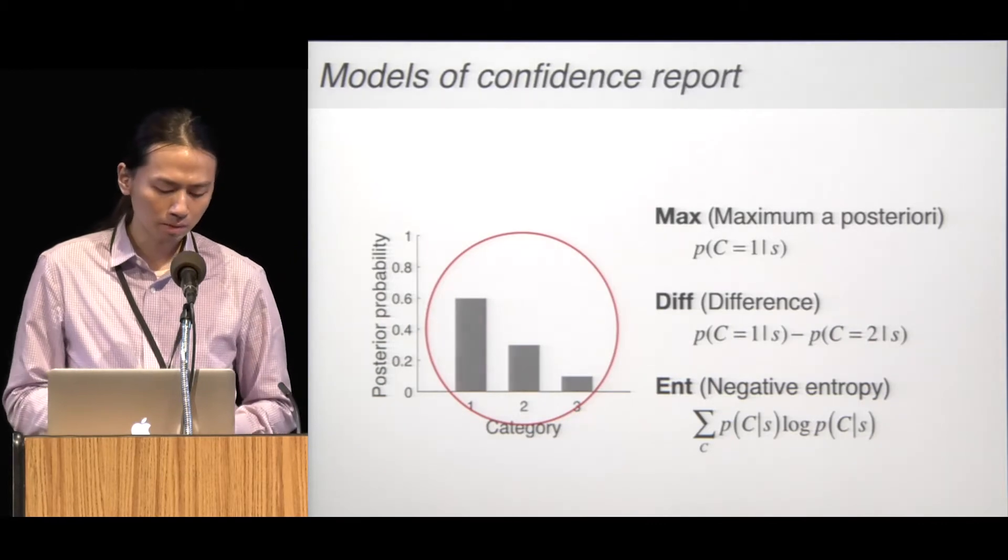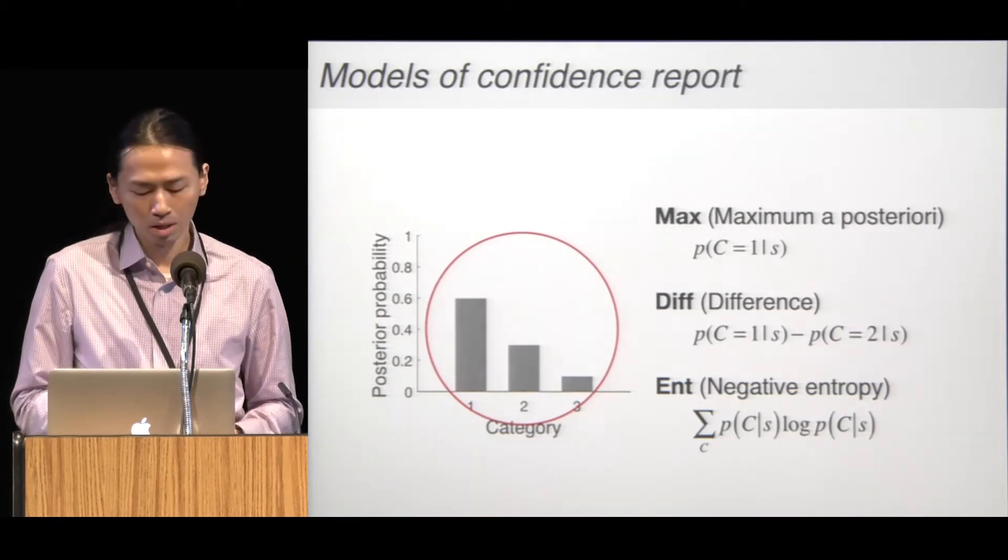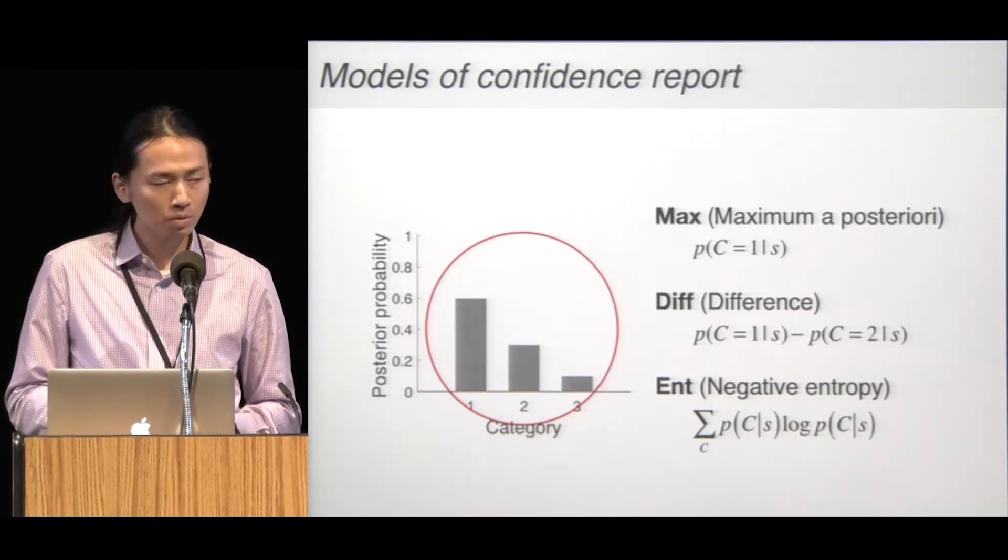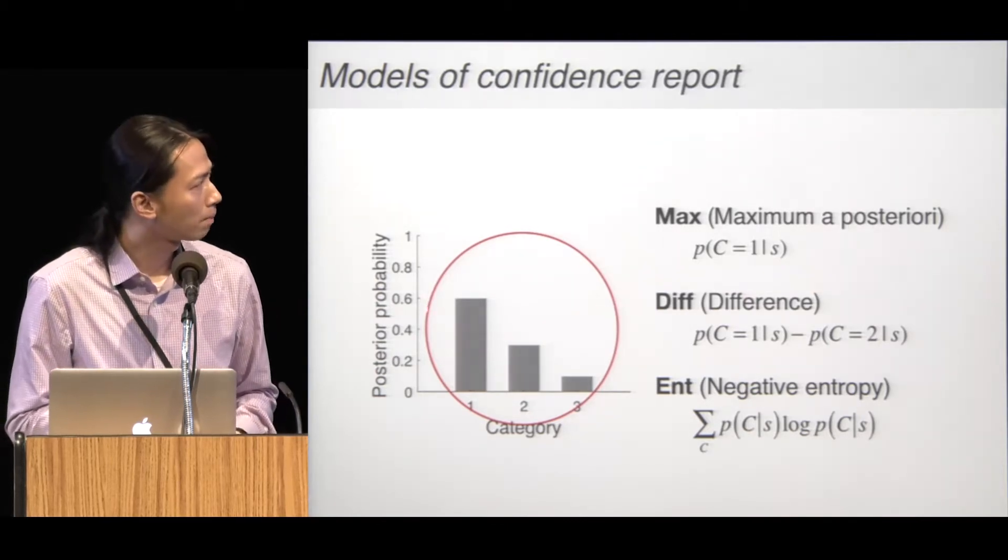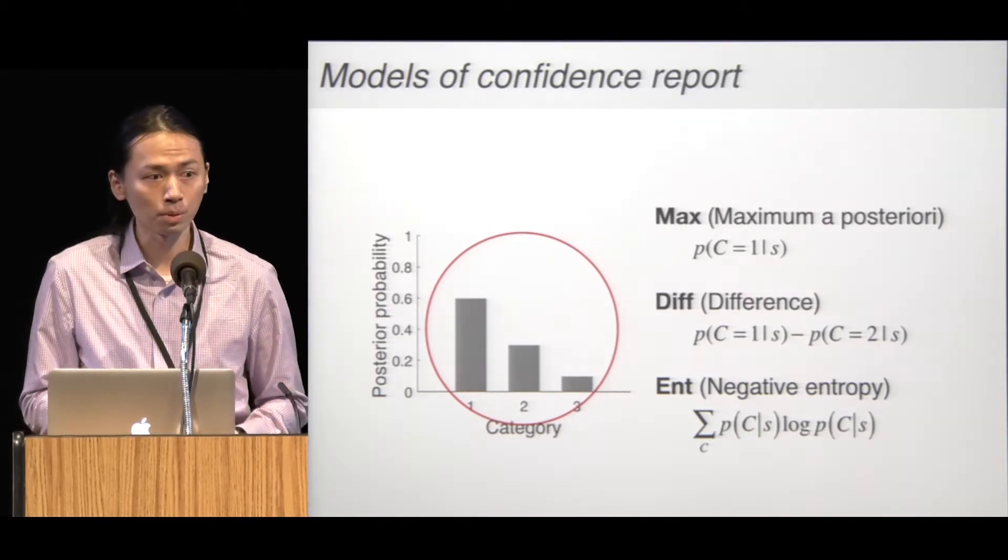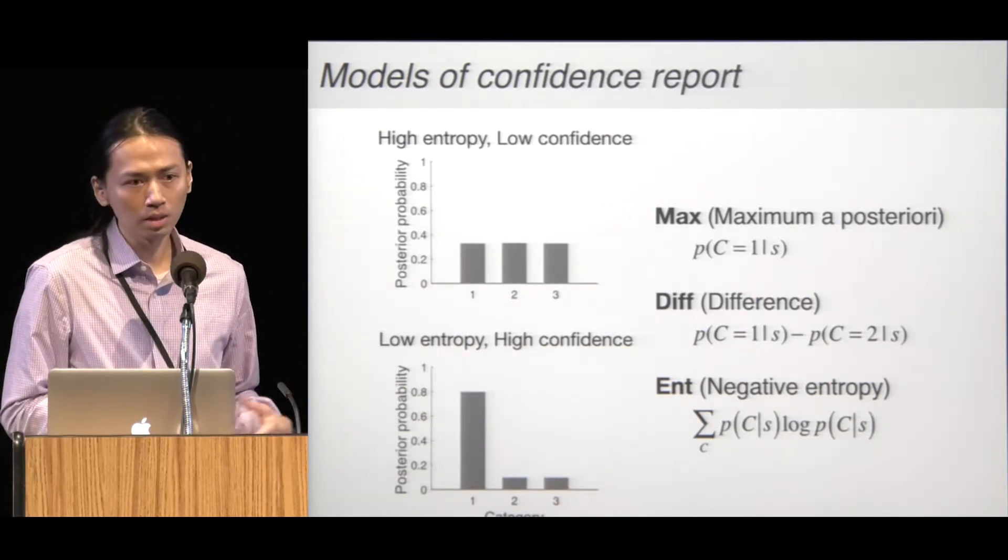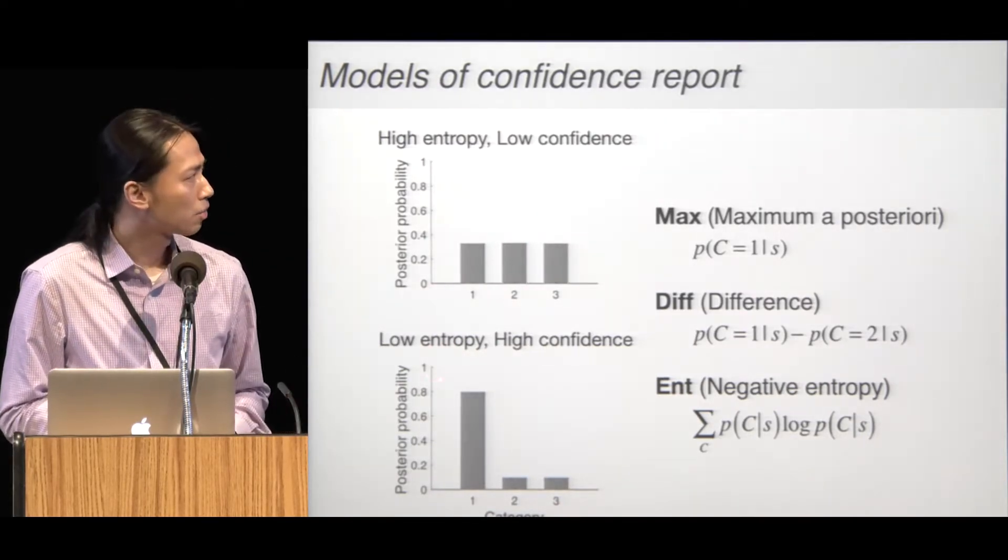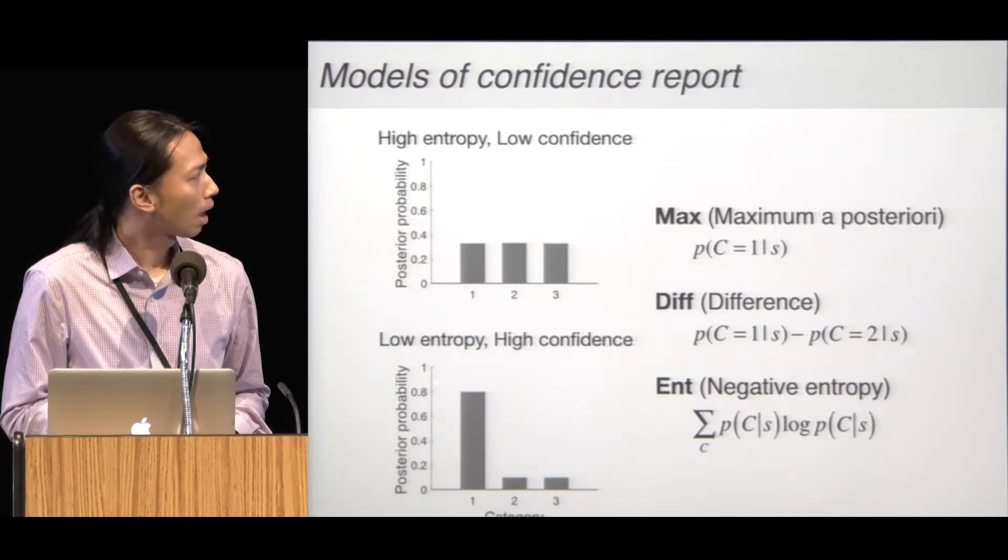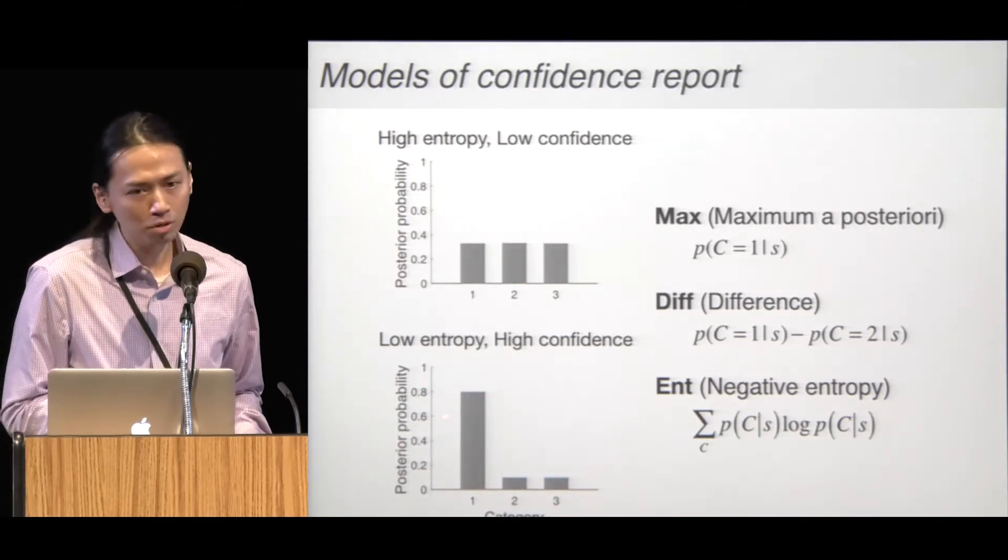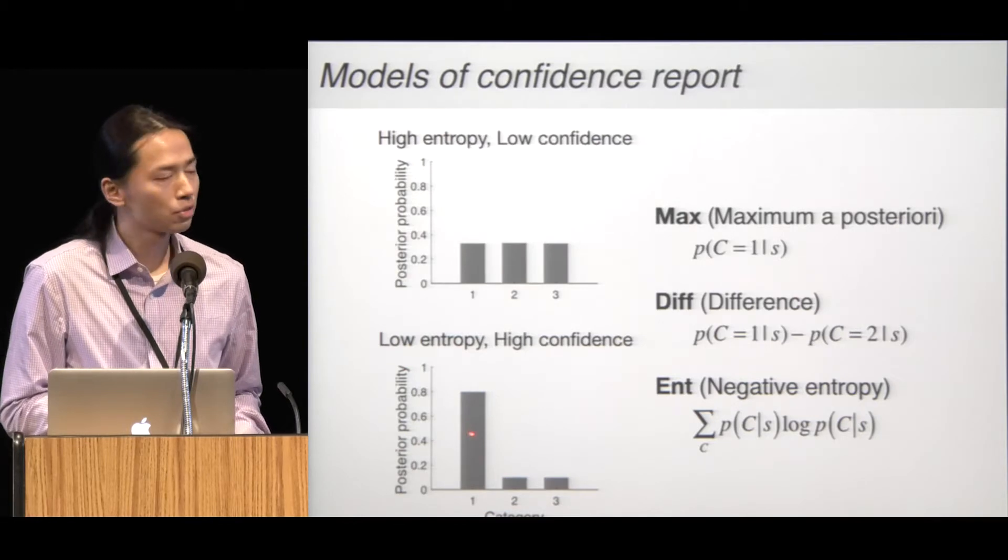It's also possible that confidence depends on the entire posterior distribution. We use entropy to describe the spread of the posterior distribution. Distribution with high entropy is flat and leads to low confidence. Distribution with low entropy is more concentrated to one choice and leads to high confidence.